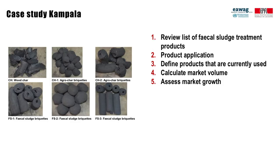The fifth step is assessing the market growth for each substitute product. In some cases, there are trend forecasts available. In others, it is estimated by extrapolation from previous years together with interviews. At the time of our implementation, the estimated market growth of charcoal in Kampala was 9%.